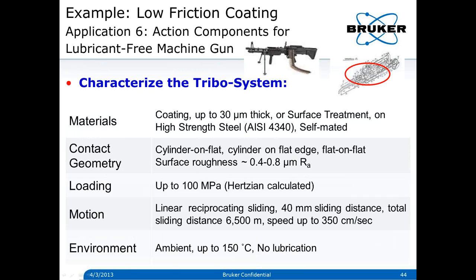The last example is looking at the action components for a lubricant-free machine gun. You want a lubricant-free machine gun because in hot, dry, dusty environments, liquid lubricants can attract dust leading to jamming. So there was interest in developing a weapon that did not require any liquid lubricants. Our coating of interest can be up to 30 microns (1 mil) thick — it can be a surface treatment on high strength 4340 steel. It's probably a self-mated interface with coatings on both halves, since the clearances and tolerances can't change by more than about 30 microns.